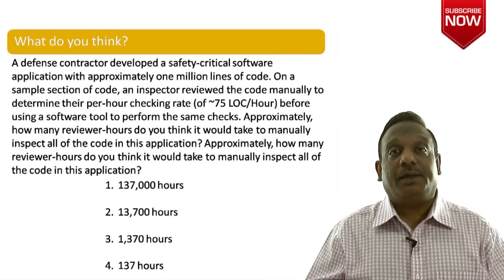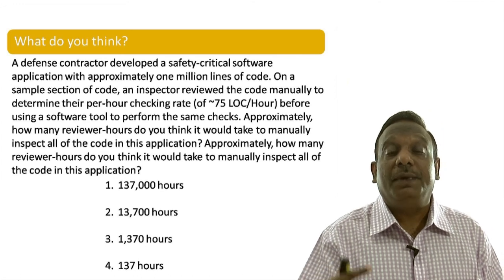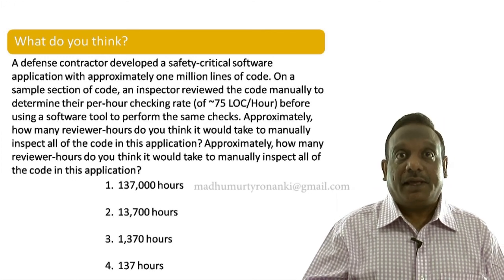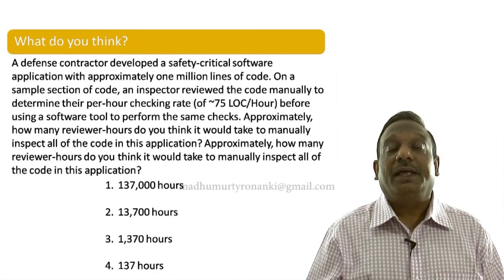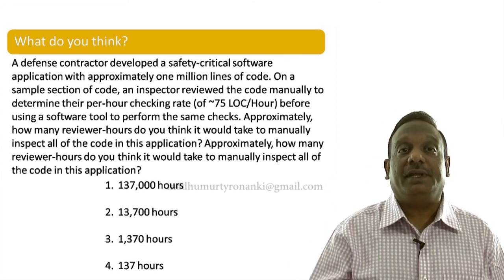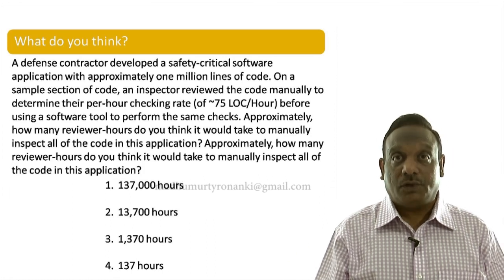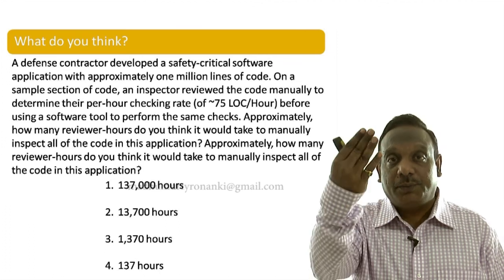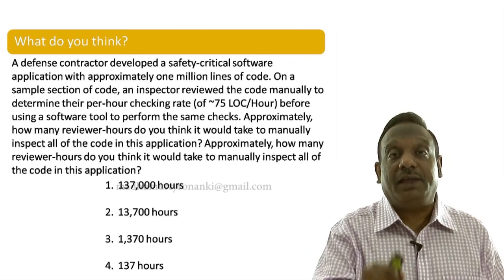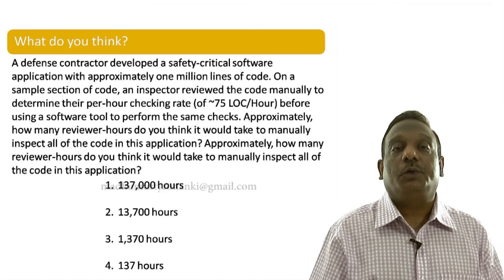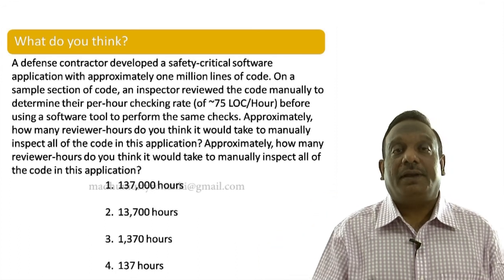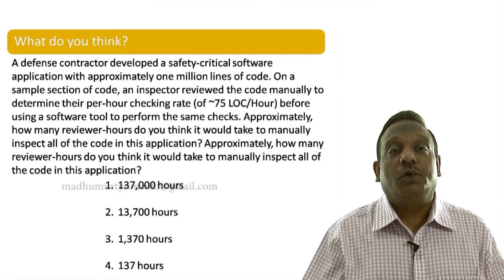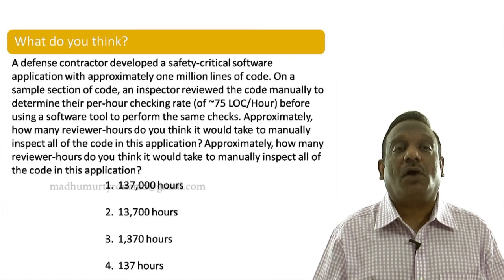A defense contractor developed a safety-critical software application with approximately 1 million lines of code. On a sample section of code, an inspector reviewed the code manually and determined a checking rate of approximately 75 lines of code per hour. So they depended on manual labor for code reviews, and measured that speed before using a software tool to perform the same check.